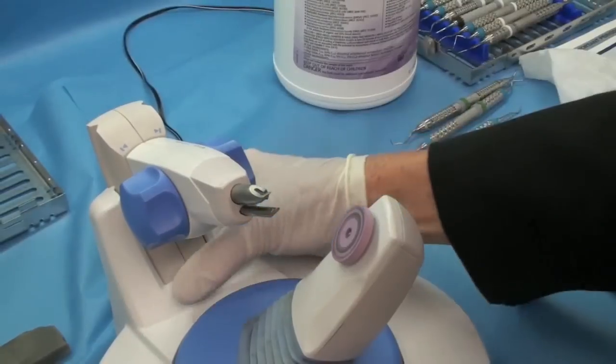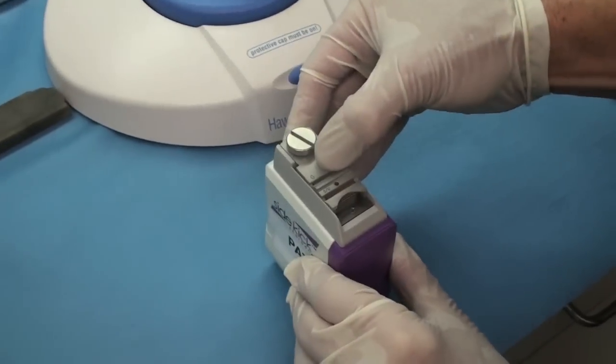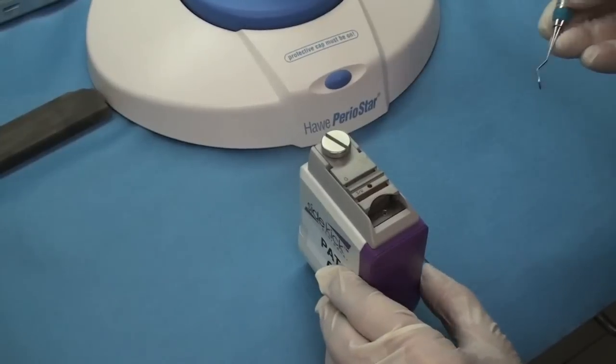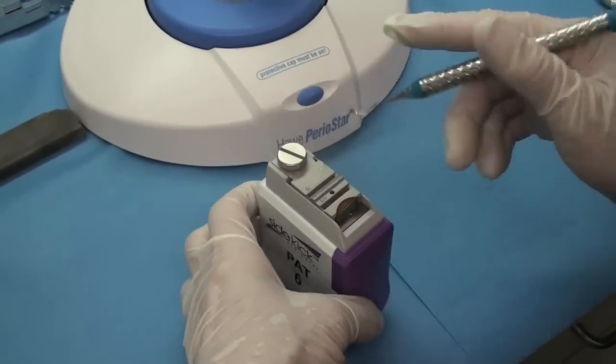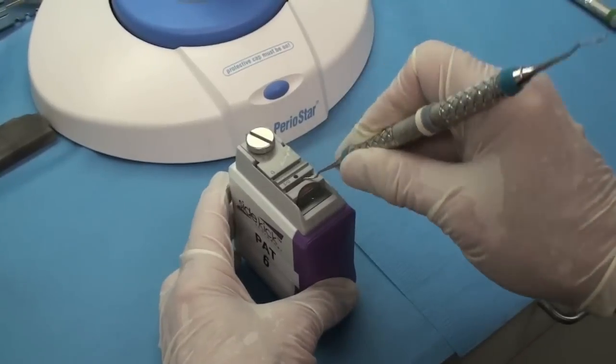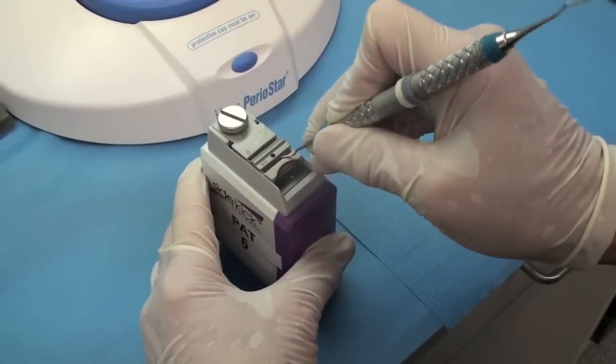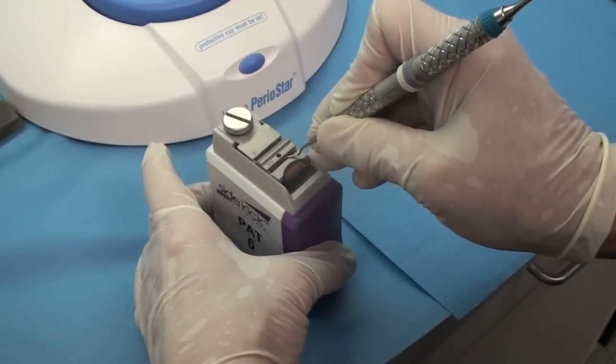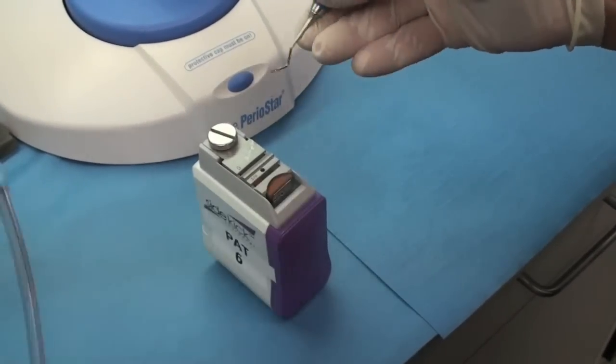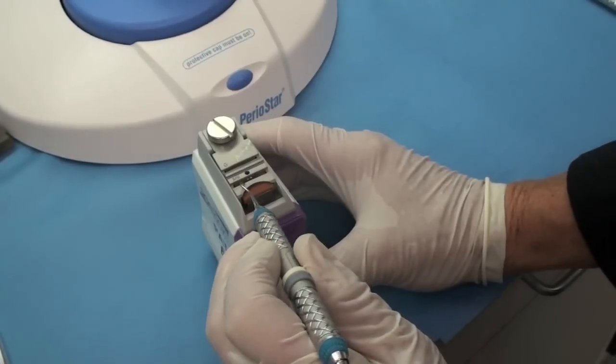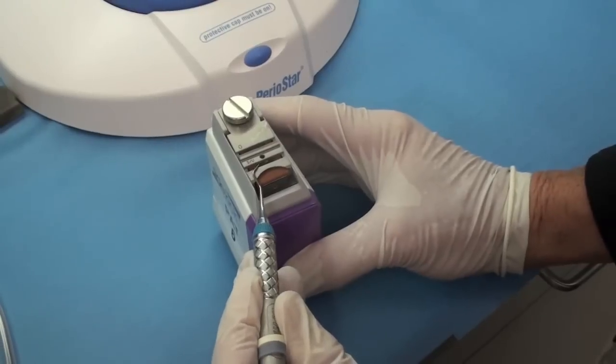So if you're going to use the Hu-Friedy Sidekick, you would do the same thing. It's got a line for Gracey's and for scalers and universals. So here's my universal. It's got a little power switch. I like to get it in the position first. You put the back of the instrument against the back and then you hold it flat. And then you do the other side the same way. The back against the instrument and you hold it flat.